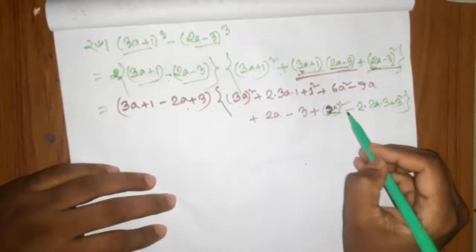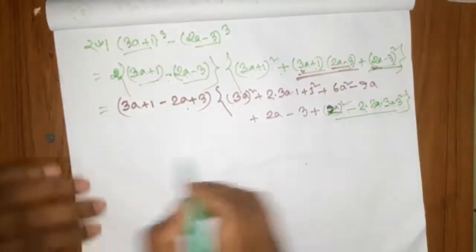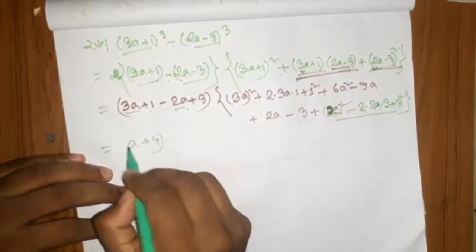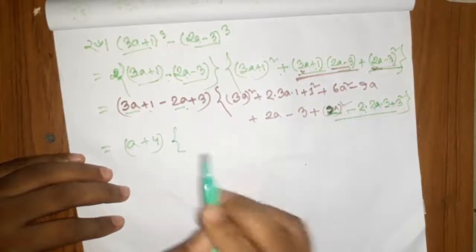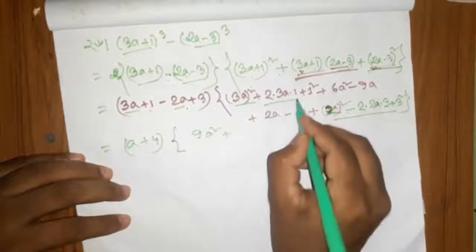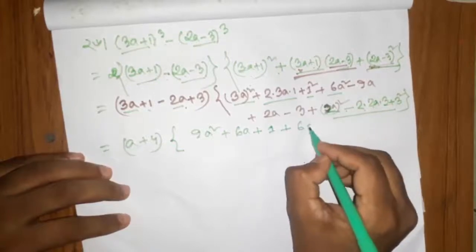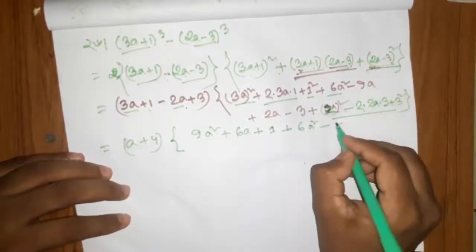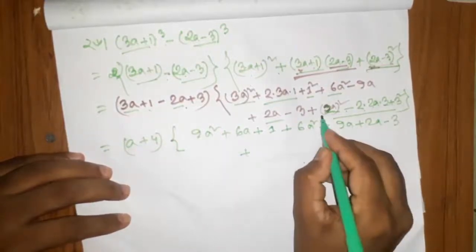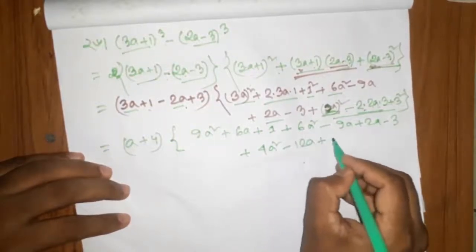a square minus 2ab plus b square, a minus b square. We have to look at this: 3a is equal to a, and 3a is equal to a, and 3a is equal to 3a is equal to 9a square, and 6a is equal to a, and 6a square minus 9a plus 2a minus 3, plus 2a, 4a square minus 12a plus 9.